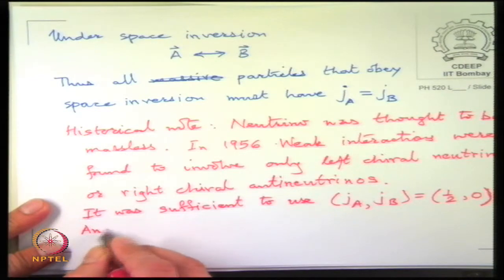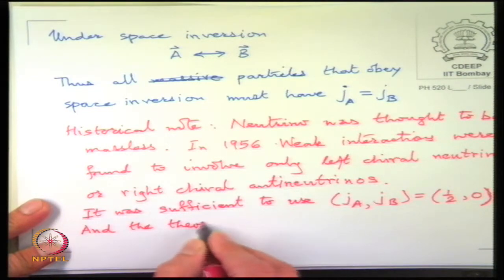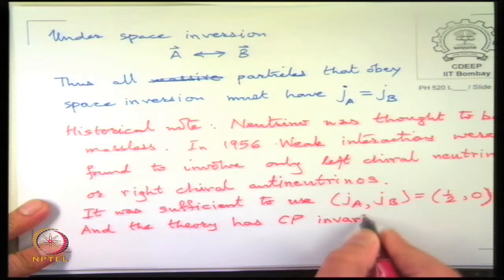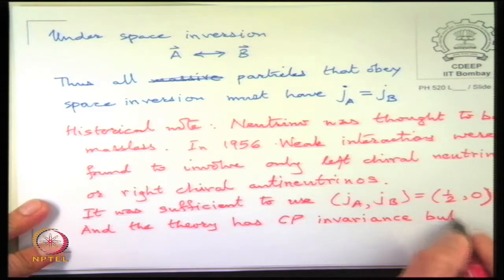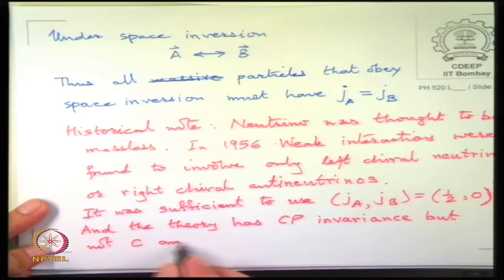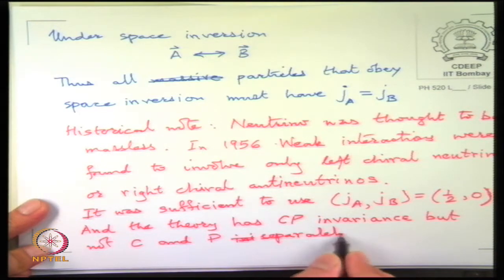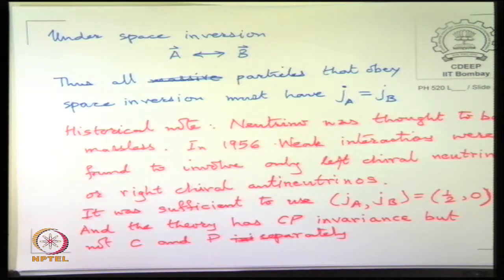It was sufficient to use this, and the theory has only CP invariance but no individual P or C invariance separately. If you perform a P transformation you get a right-chiral neutrino, but then you should do a charge conjugation as well and make it into an anti-neutrino — then the physics would be fine. That is what is observed in nature: the weak interactions are only CP invariant and not P or C invariant.